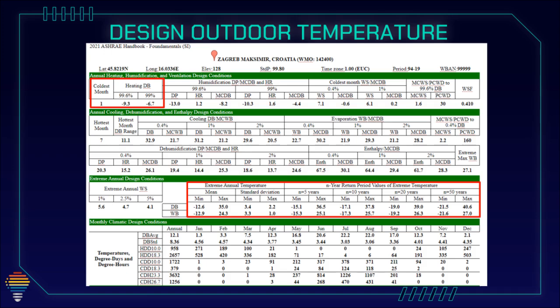But what is the difference? For example, on ASHRAE website, you can also see how many times in the last 5, 10 or 50 years was the lowest temperature. For Zagreb example, in the last 5 years minimum was minus 15. In the last 10 years minus 17. In the last 20 years minus 19. And in the last 50 years minus 21.